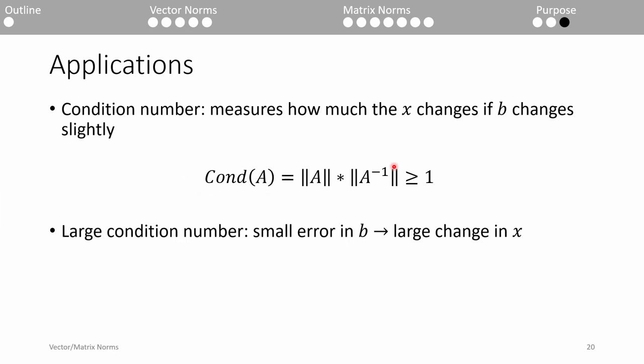The last important application of the norm we'll cover is something called the condition number. The condition number is a trendy topic in the error analysis side of numerical methods, but we unfortunately don't have enough time to cover it in depth in the semester. Essentially, the condition number of a matrix measures the system's sensitivity to small changes in the forcing function. The condition number will always be at least 1.